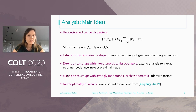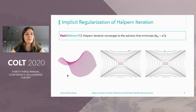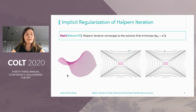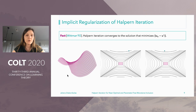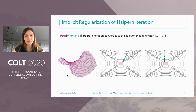One strong reason our community should give much more attention to Halpern iteration is that it is an implicitly regularized method, meaning that if the solution is non-unique, the method always converges to the point closest to the initial point. In particular, if we start from zero, we get the minimum-norm solution. This is illustrated in the examples shown on the slide, where the pink rectangle represents the set of all solutions.